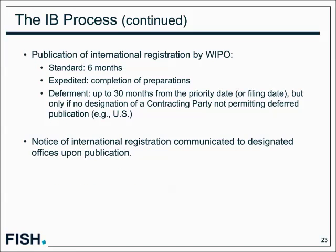Standard publication of the International Registration by WIPO is six months after the date of International Registration, or as soon as possible after six months. An applicant can request immediate publication, in which case publication occurs immediately after International Registration. Applicants can also request deferment of publication — under the Hague Agreement, that extension can be up to 30 months from the priority date. However, deferment is not permitted if the application designates a contracting party that does not permit deferred publication, which includes the United States. Some contracting parties have also limited the period of deferment to less than 30 months.